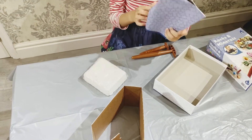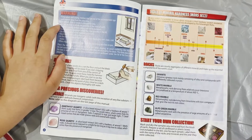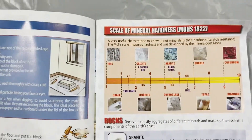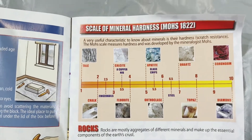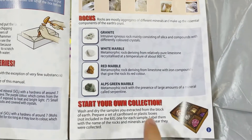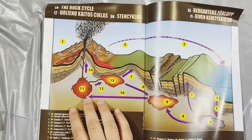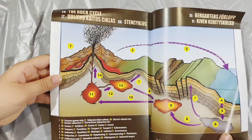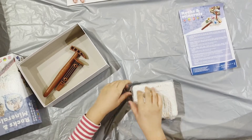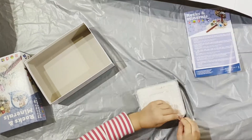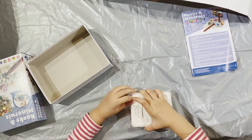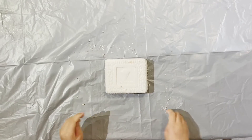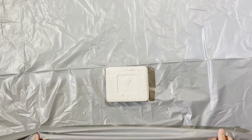We got instructions. Wow, it tells all about the rocks and minerals that are supposed to be in here. And then we can even start our collection in here. It even told us how the rocks are made. Let's open the block now. I'm so excited. It's going to be a little messy, so that's why we got this plastic sheet over the table.